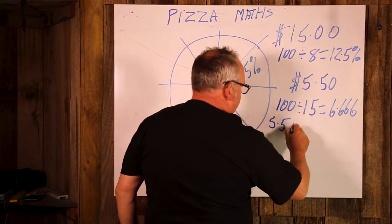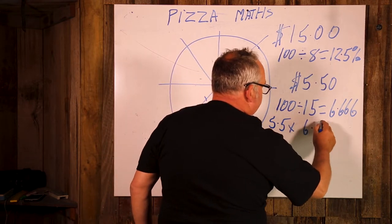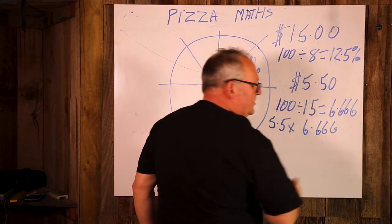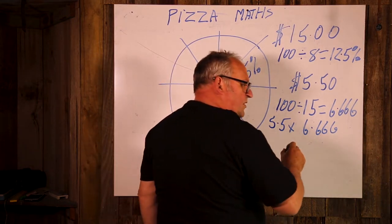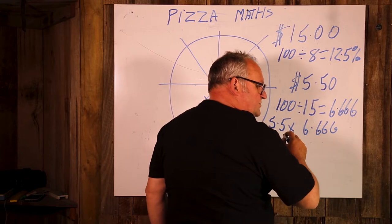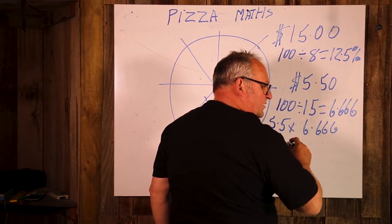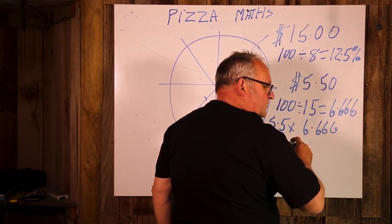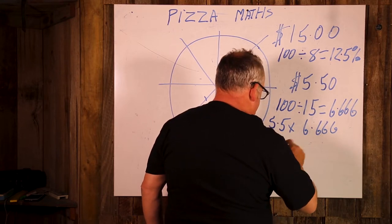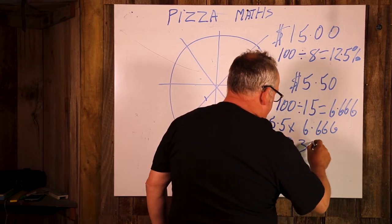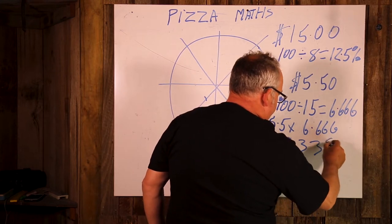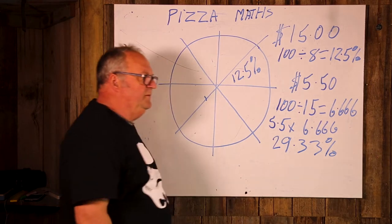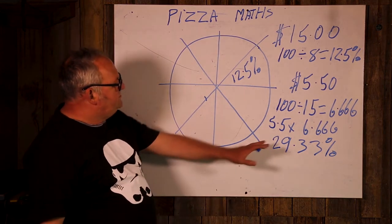because that's how much he's put in, times 6.666, which equals, let's see, 29.33. So that's the percent of the pizza he's paid for, which is about a third,